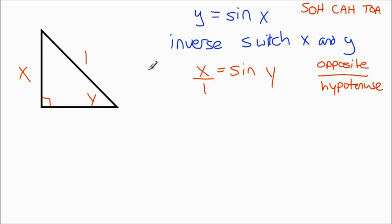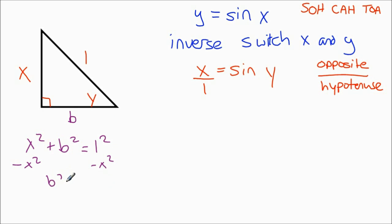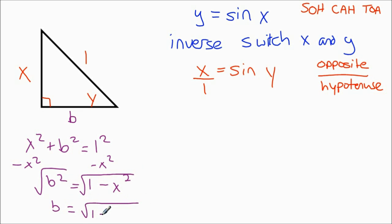Now I'm going to solve for what b is here using the Pythagorean theorem. So I'll write out x squared plus b squared equals 1 squared — that's a squared plus b squared equals c squared. Subtracting x squared from both sides, we get b squared equals 1 minus x squared. Taking the square root of both sides, b equals the square root of 1 minus x squared. Technically it should be plus or minus, but since we're dealing with length, I only care about the positive version.